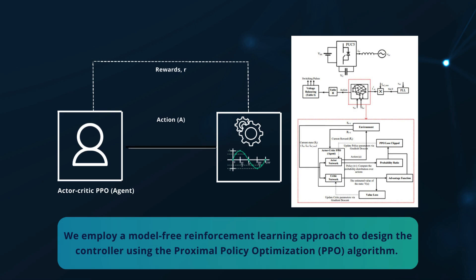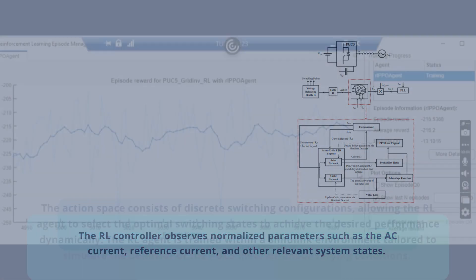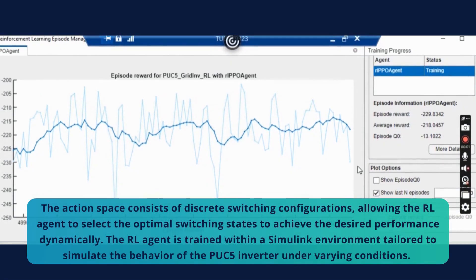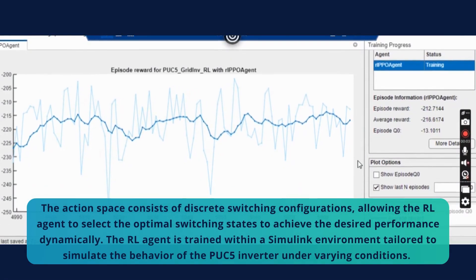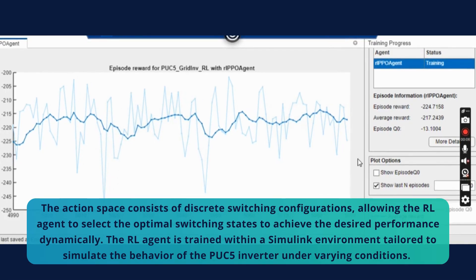The RL controller observes normalized parameters such as the AC current, reference current, and other relevant system states. The action space consists of discrete switching configurations, allowing the RL agent to select the optimal switching states to achieve the desired performance dynamically.